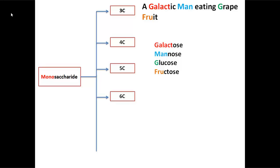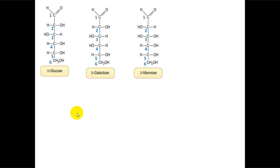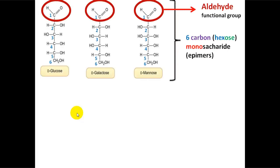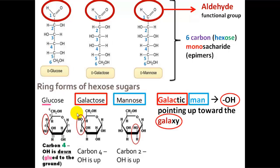Glucose, galactose, and mannose are almost identical. They all have the aldehyde group as a functional group and they all have a five carbon ring structure. The difference is that glucose has its OH group at the fourth carbon glued to the ground, galactose has its OH group at the fourth carbon pointing up in the sky and toward the galaxy, and mannose is the same as glucose but it just has the OH group at the second carbon pointing up.